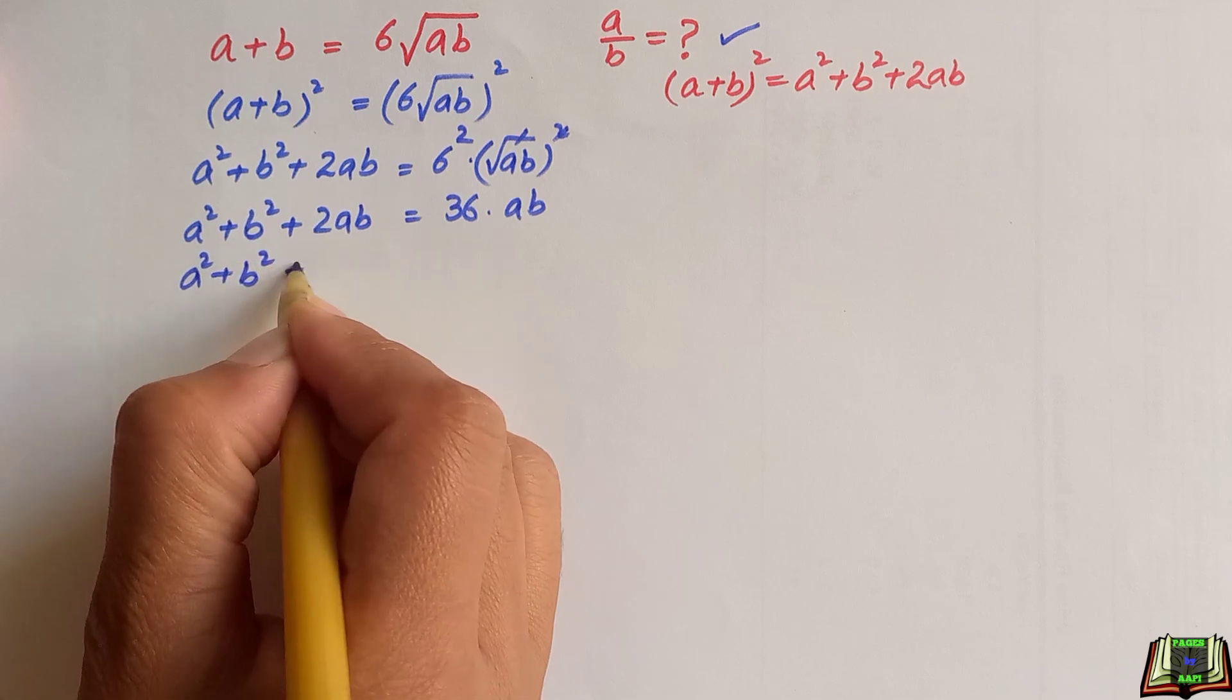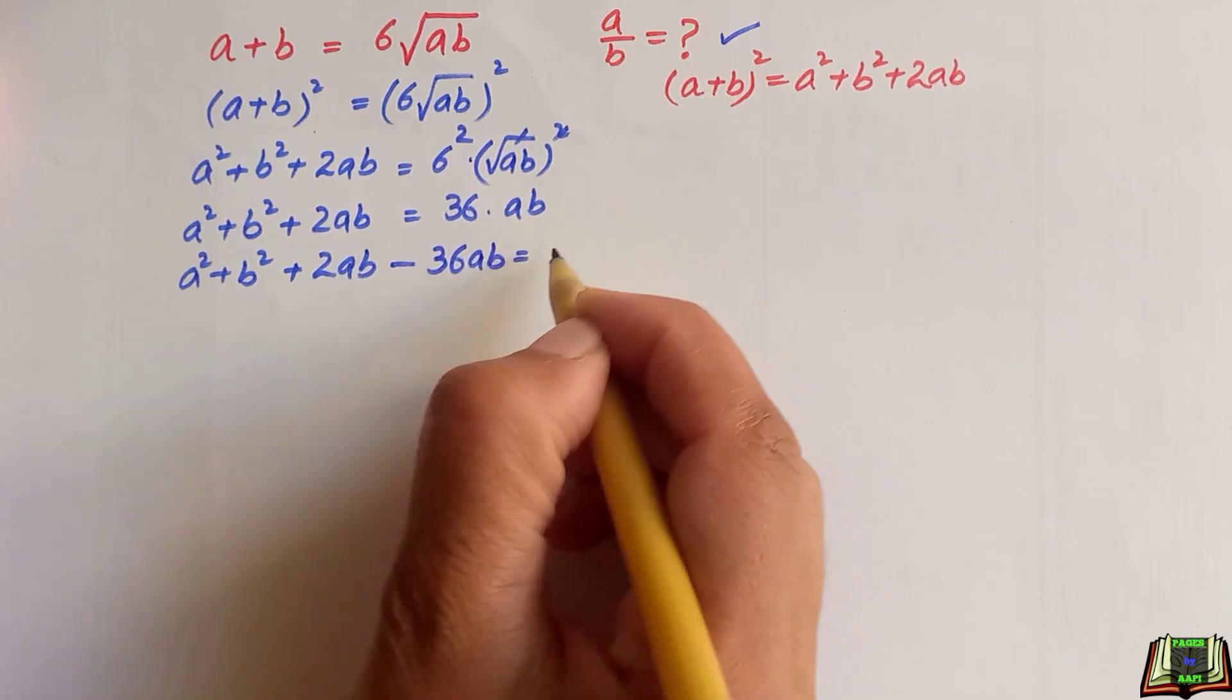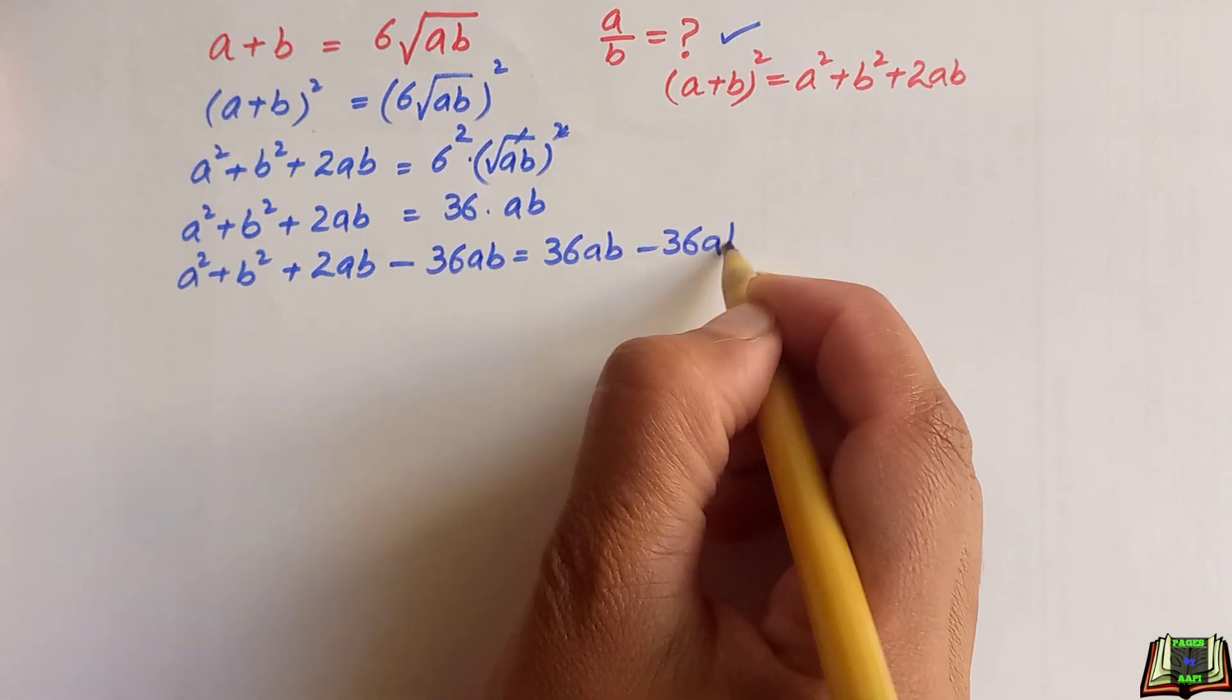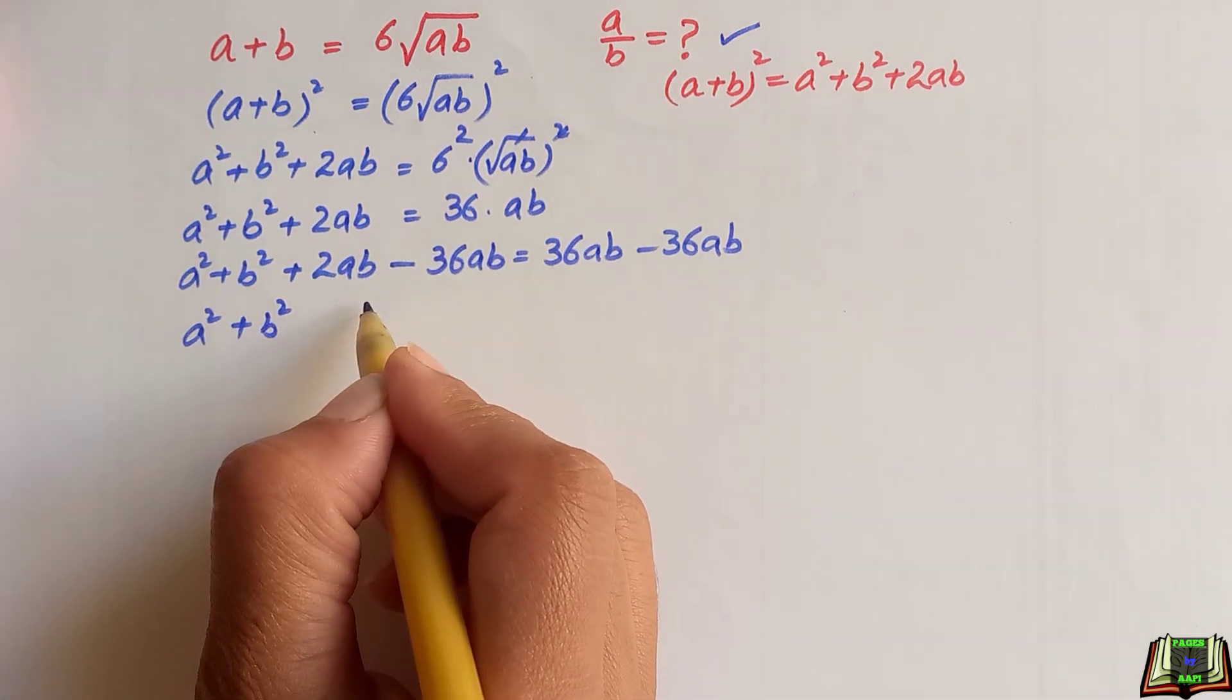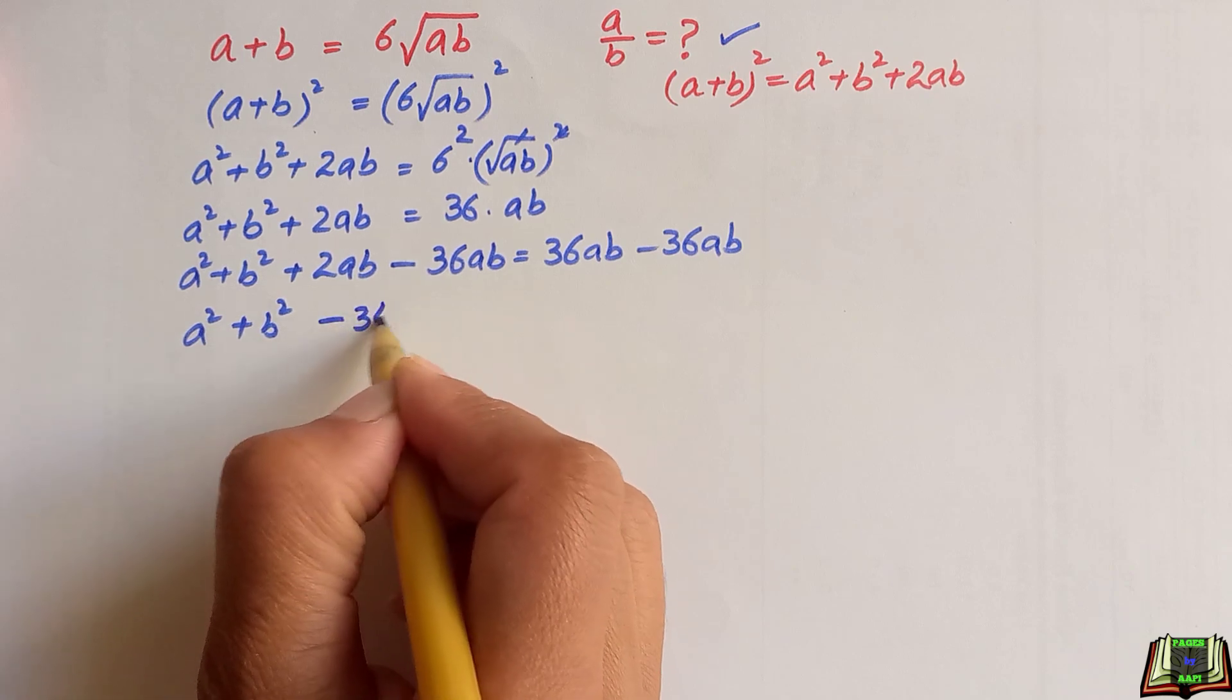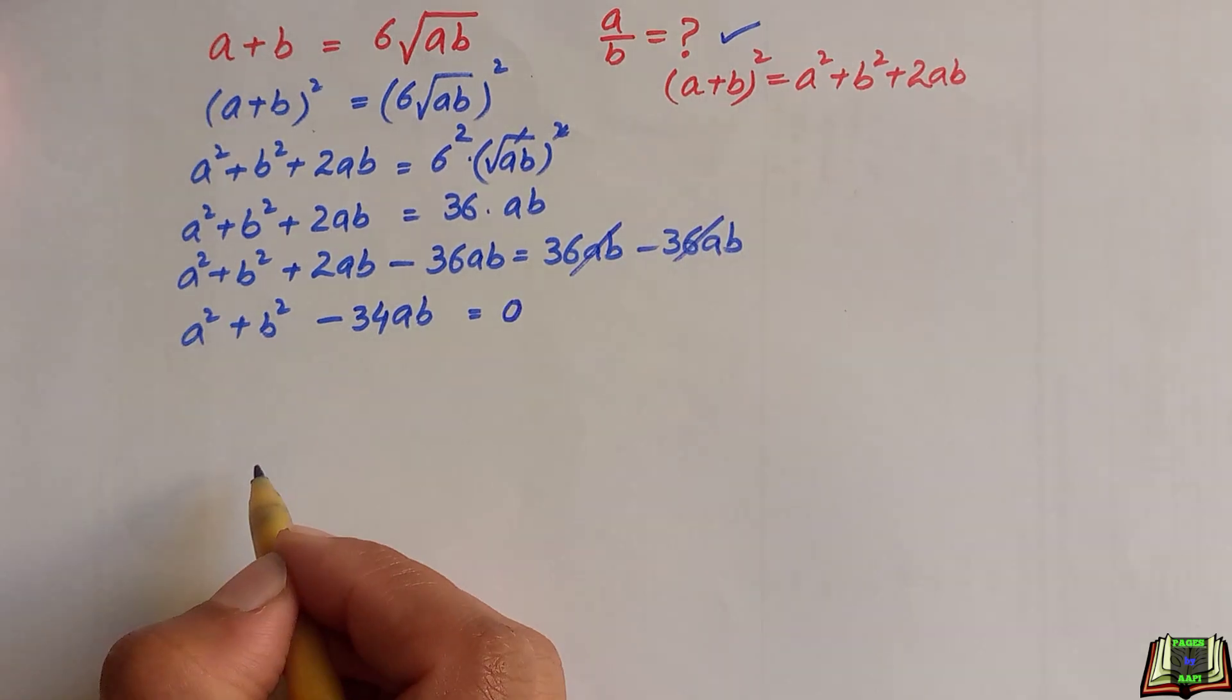we are going to subtract 36ab on both sides. a square plus b square after subtracting 2ab from minus 36ab we have minus 34ab. On right hand side, this and this will be cancelled out which is equal to 0.